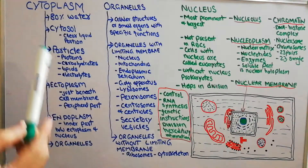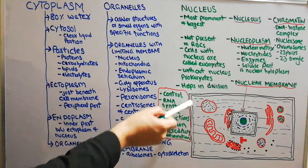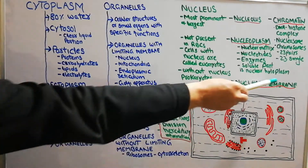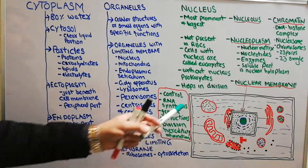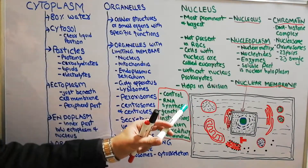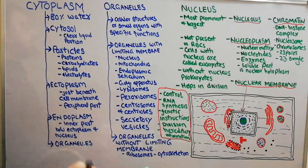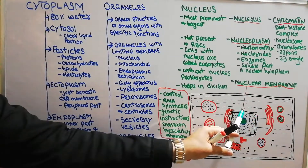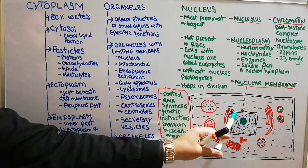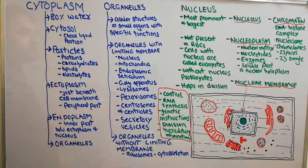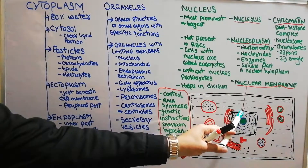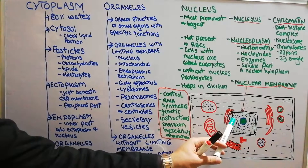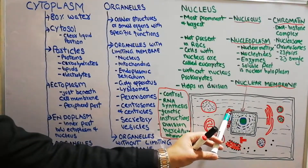Outside the nucleus there is a nuclear membrane. Just as the cell is surrounded by a membrane and organelles are surrounded by membranes, the nucleus is also surrounded by a membrane known as the nuclear membrane. Like the plasma membrane which is made of a lipid bilayer, the nuclear membrane is also made of two layers. The space between the two layers of the nuclear membrane is known as the perinuclear space.